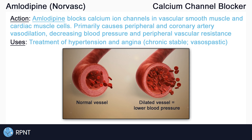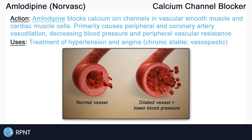It's easier for the heart to pump because the afterload, or the pressure that the heart has to overcome to pump blood into circulation, is lower. This allows the heart to use less energy or less oxygen, which is very beneficial in angina. Amlodipine can be used for chronic stable angina or vasospastic angina.